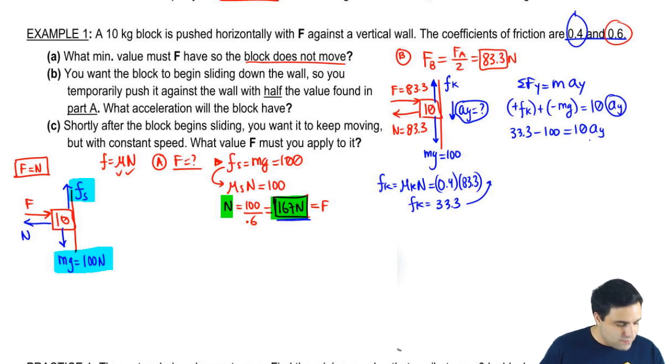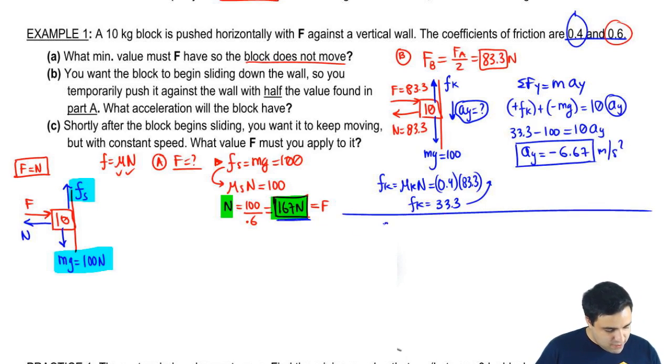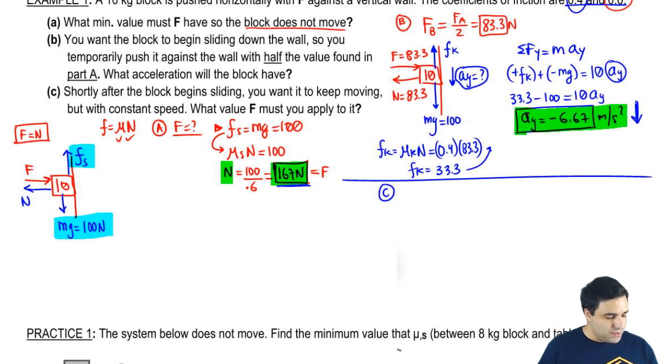If I move things around, I get that a_y equals negative 6.67 meters per second squared. That's it for this part. It's negative because it's going down. Just to be super clear, I'm going to put an arrow here to indicate that as well.